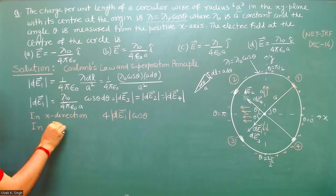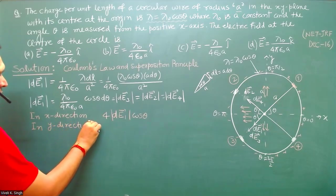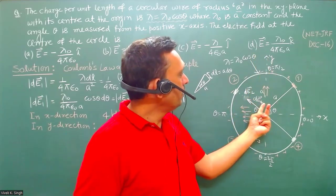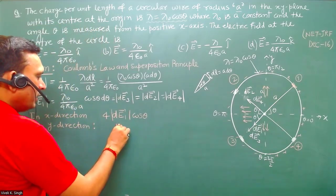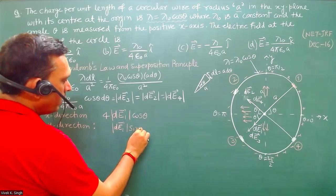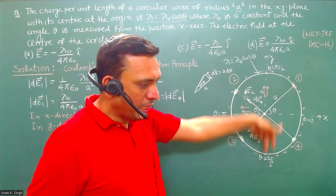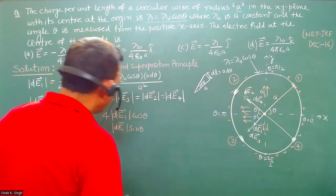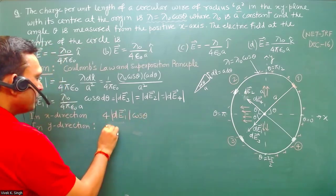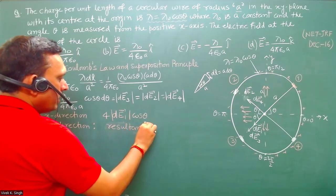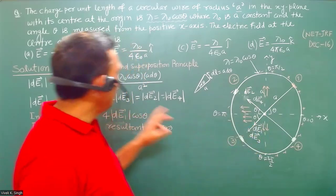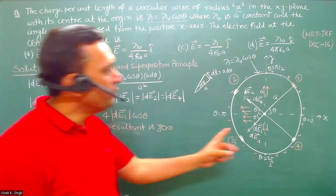In the positive Y direction we have 2 |DE1| sin theta, and in the negative Y direction also 2 |DE1| sin theta. So the net resultant in the Y direction is zero. We can now identify that the direction of the net electric field is in the minus x-cap direction.